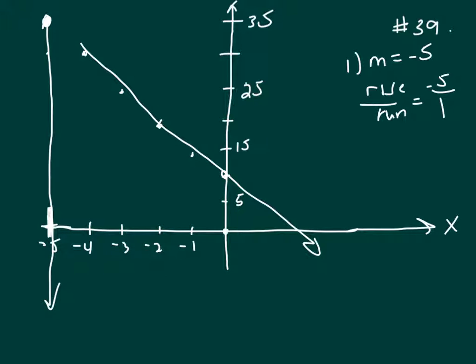But if I started, let's say here, at that point negative 5 comma 5, and if I go down negative 5 and run 1, I've got a negative x-intercept. So clue 1 doesn't work.